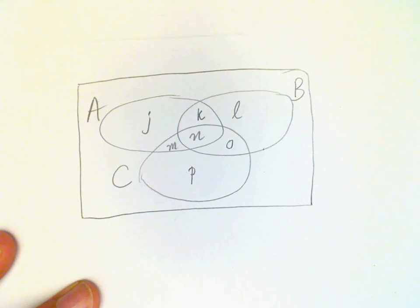And now I want to identify which regions comprise A intersect B union C.